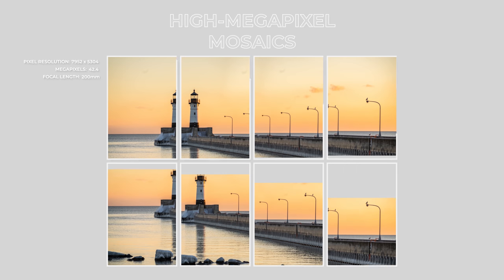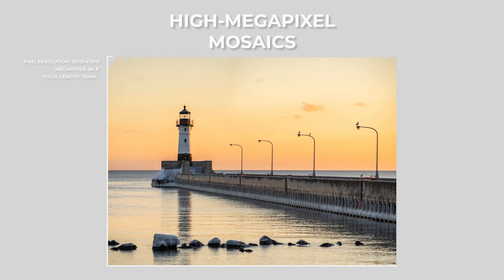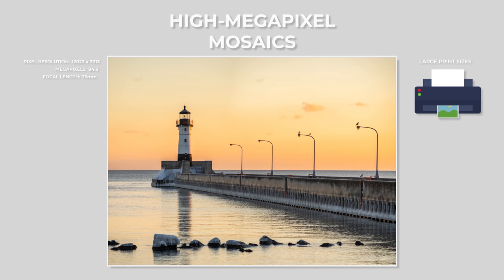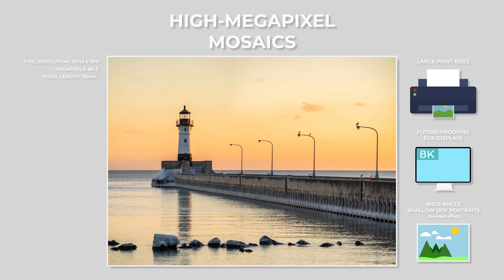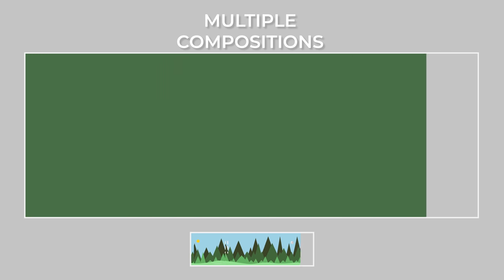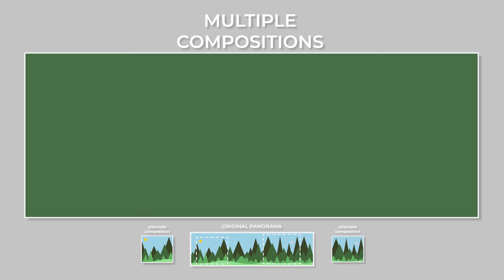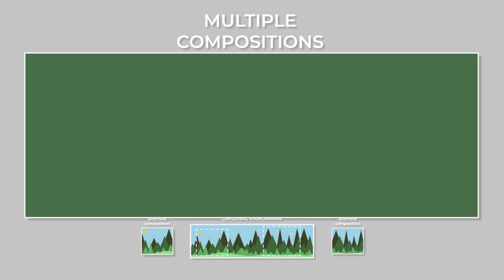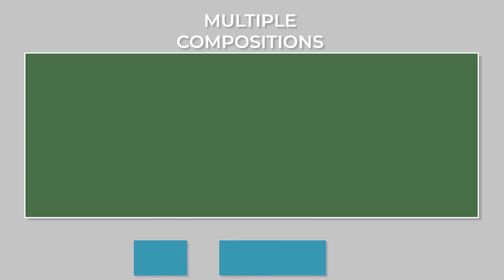Panoramas are powerful tools in photography. They can be used to make super high-resolution photos by combining many long focal length images into a wide-angle field of view, allowing for large print sizes, viewing on large displays, and even wide-angle shallow depth-of-field portraits. They can also be used to produce multiple images — capturing a scene in its entirety might reveal different compositions, and you won't be constricted to a traditional DSLR aspect ratio either.